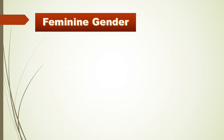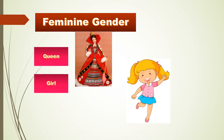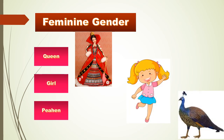When a noun stands for a female, it is called feminine gender. For example: queen, girl, peahen, cow, mother, sister, and so on. These nouns all belong to the female category and hence are known as feminine genders.